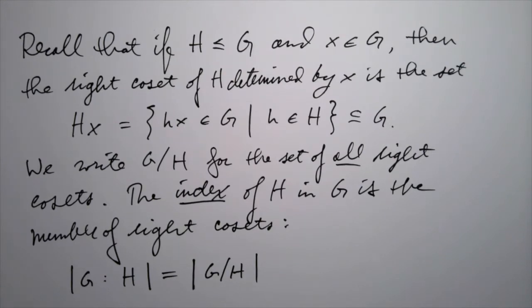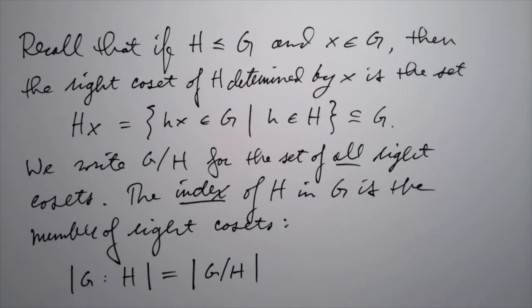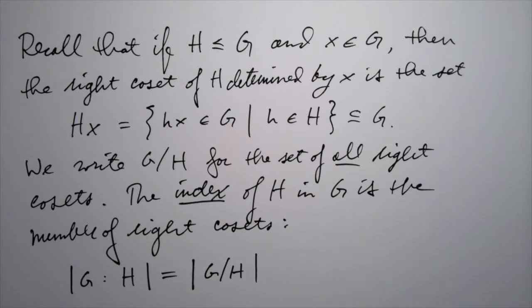Since these right cosets, as we saw before, are exactly the orbits for the left translation action of the subgroup H on G, we know that these right cosets partition the entire group G. So there's some number of right cosets, and the index is exactly the number of them — the number of cosets in this partition.